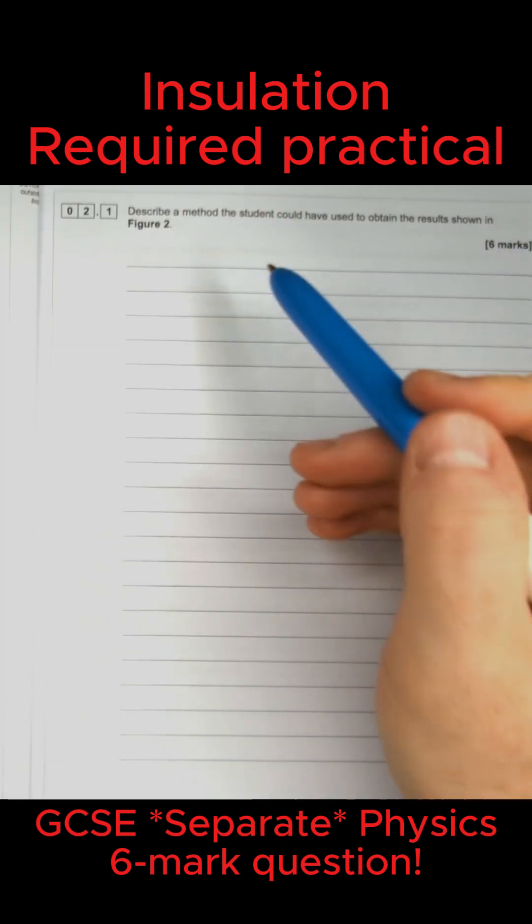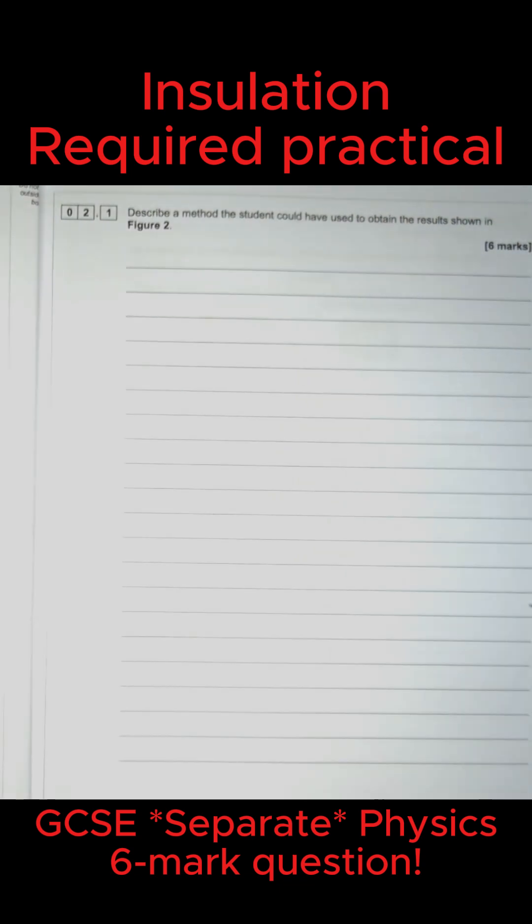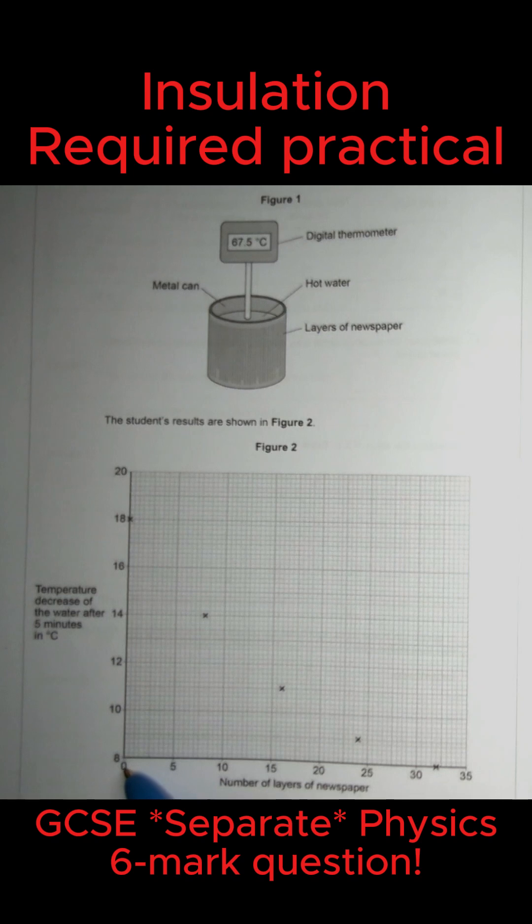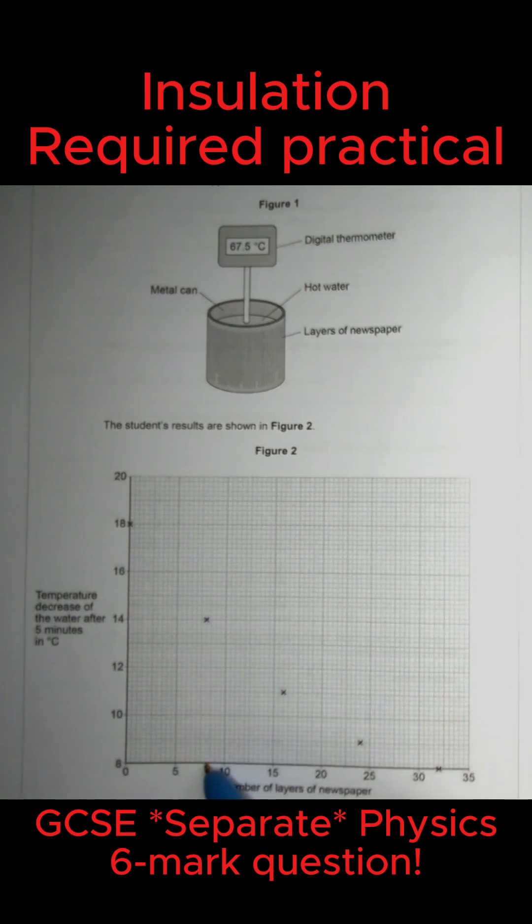The question is very simple: describe a method the student could use to obtain these results. It tells us the number of layers of newspaper used starts at zero, then goes to eight.